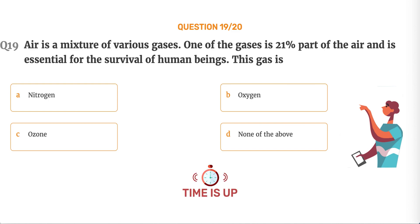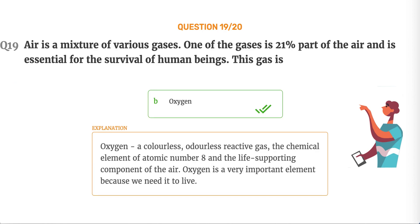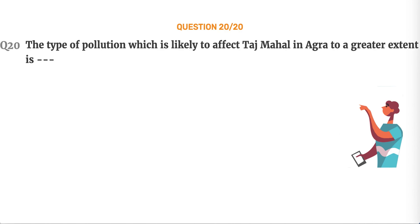The correct answer is Option B, Oxygen. Oxygen is a colorless, odorless reactive gas — the chemical element of atomic number 8 and the life-supporting component of the air. Oxygen is a very important element because we need it to live.